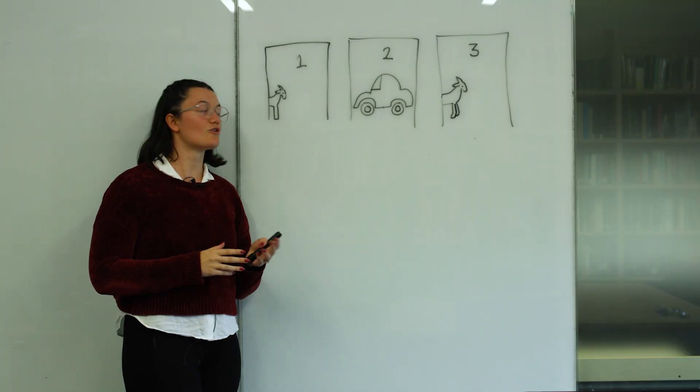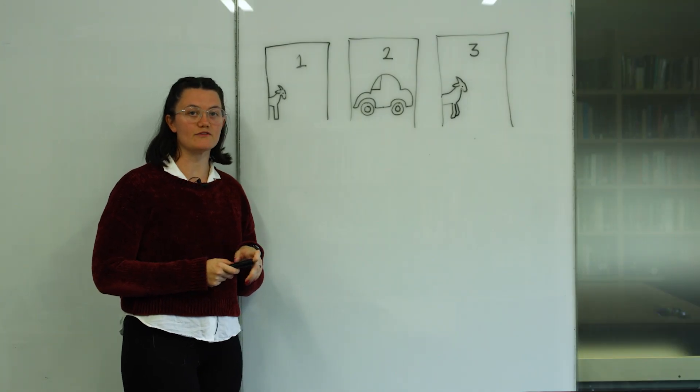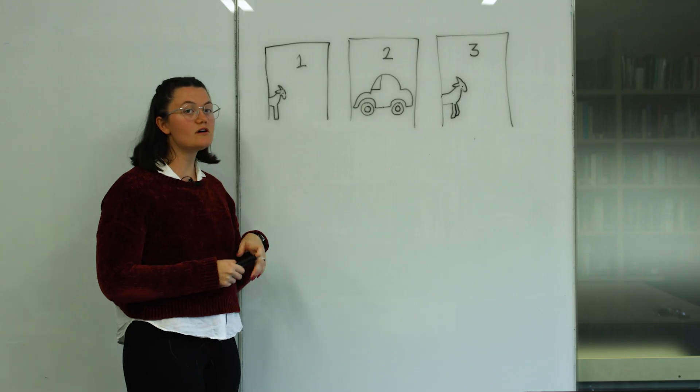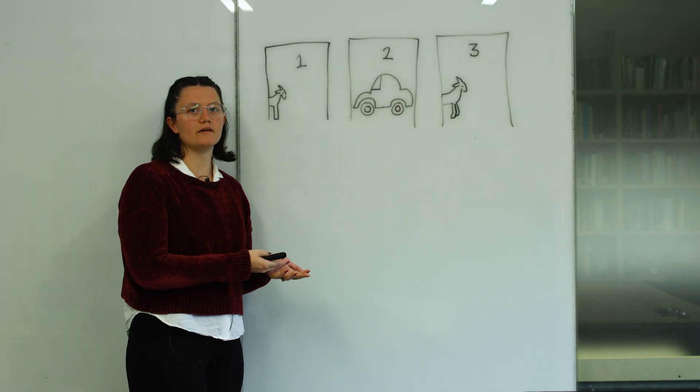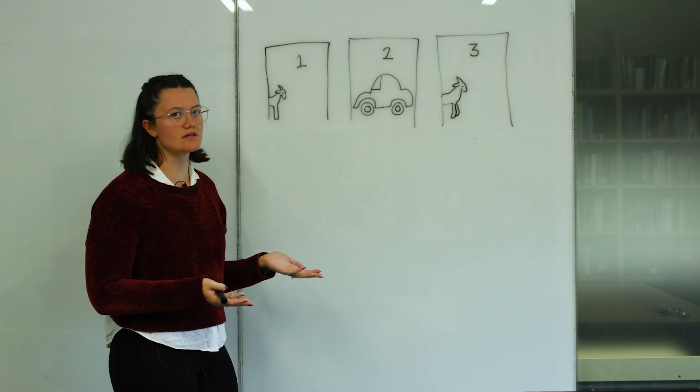So the reason why it's not actually a 50-50 chance of the car being behind the door that you originally picked is because Monty Hall is always going to open a door that has a goat behind it, right? He's still got to give you the opportunity to win a car.